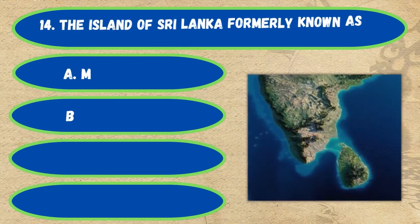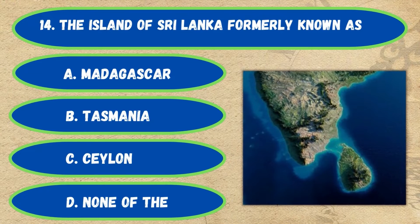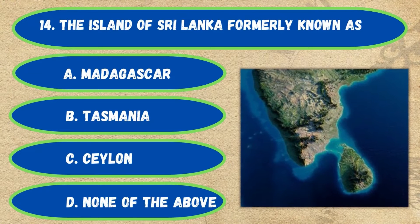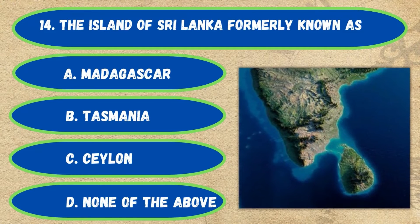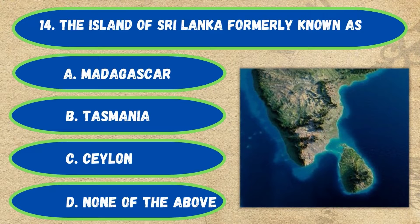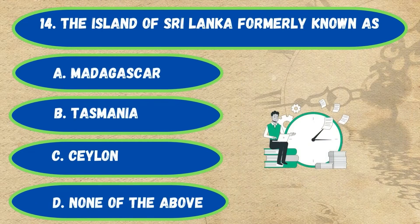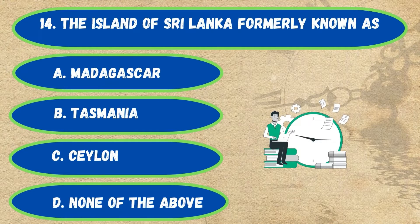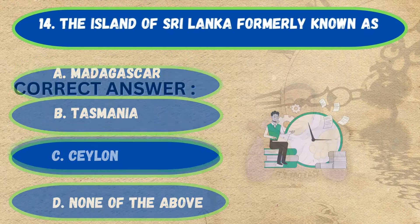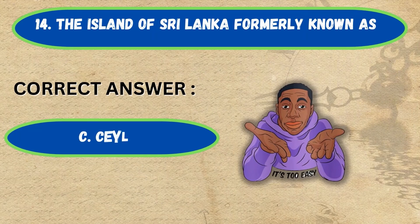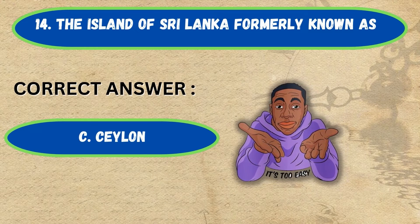Question number 14. The island of Sri Lanka, formerly known as: option A, Madagascar; B, Tasmania; C, Ceylon; D, none of the above. The correct answer is option C, Ceylon.